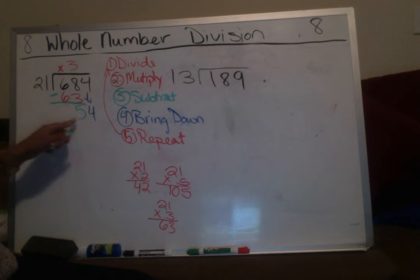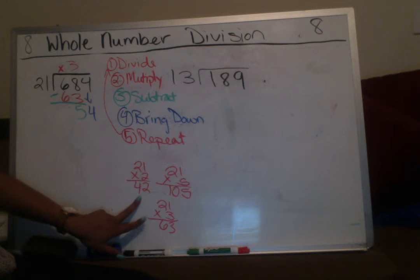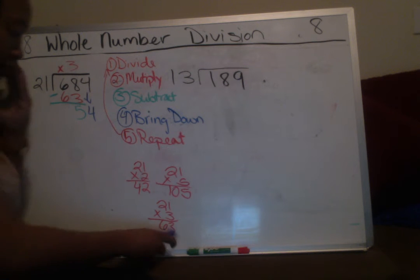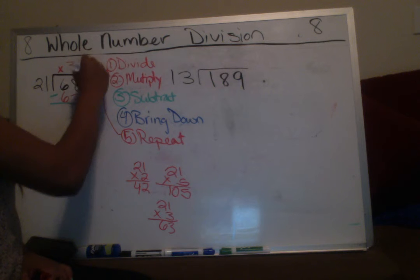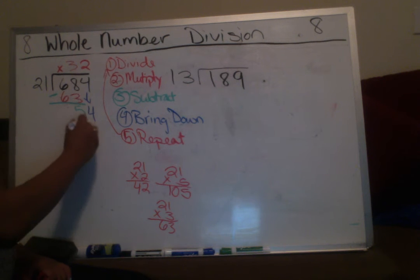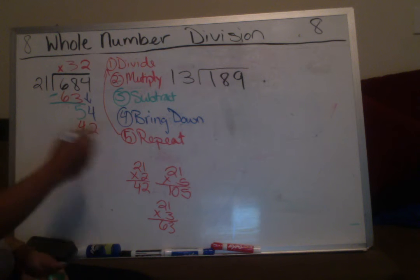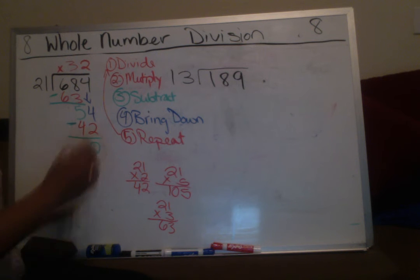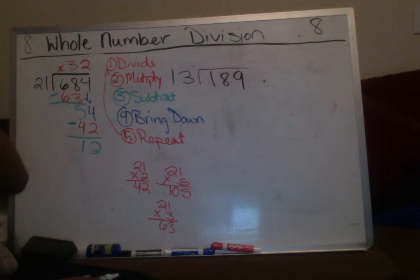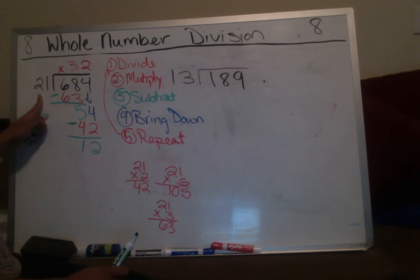Now we need to put 21 into 54. We did two, we did three — 54 falls in between, so we choose two. Having your work on paper helps you do less work. We already know 21 times 2 is 42. Then we subtract: 4 minus 2 is 2, 5 minus 4 is 1, giving us a remainder of 12.